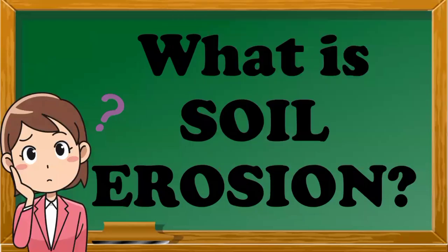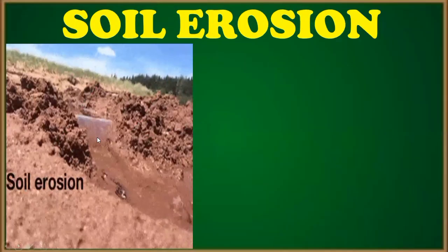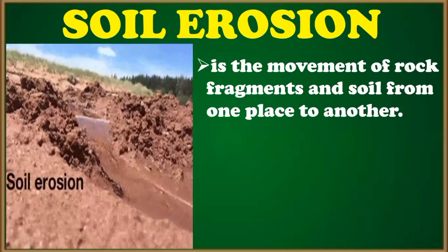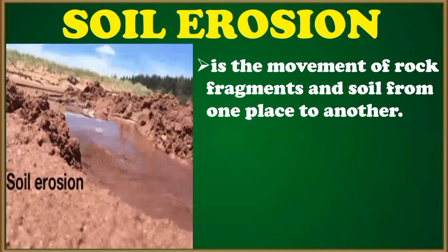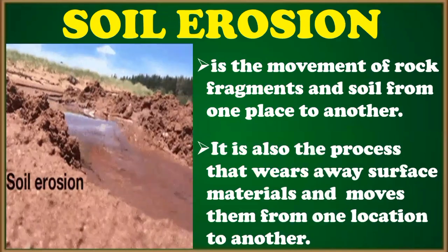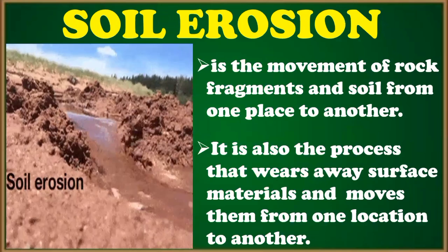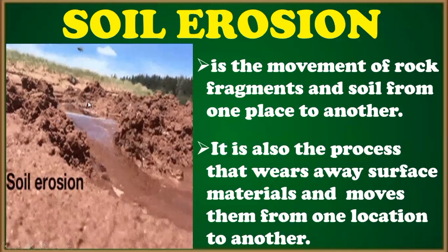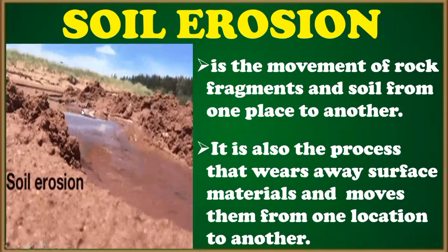Now, what is soil erosion? What do you mean by soil erosion? Let's find it out. Alright, I want you to look at the picture here, or the video here. Soil erosion is the movement of rock fragments and soil from one place to another. It is the process that wears or washes away surface materials and moves them from one location to another. As you can see, the soil here moves from this location to another location.